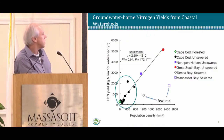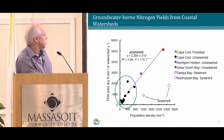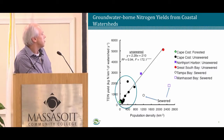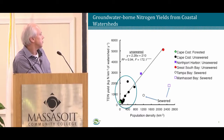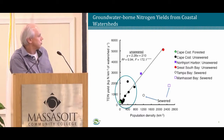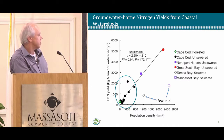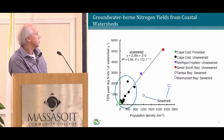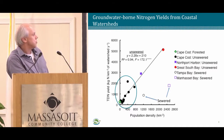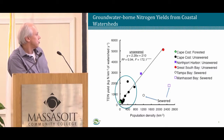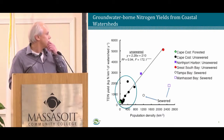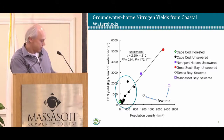Thinking about Cape Cod, we've assembled data from several published and unpublished studies — total nitrogen yield in kilograms of nitrogen per square kilometer of watershed per year versus population density. In watersheds where the primary method of wastewater disposal is septic systems, there's a very strong relationship between population density and nitrogen yield to receiving waters. The black and green circles are from Cape Cod, and the range covers sites within the BWM project; others are from Long Island and Tampa Bay, Florida, with much higher population density and greater nitrogen loads.